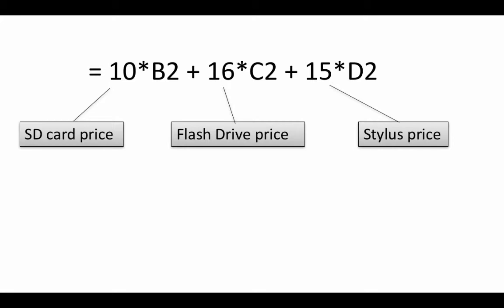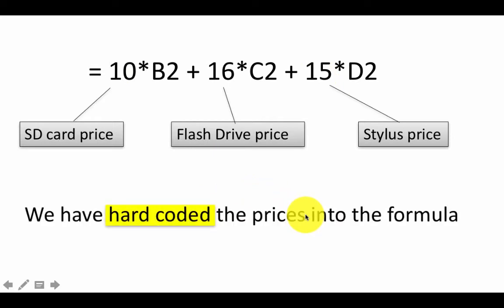When we write such numbers, actual numbers like 10 and 16 and 15 instead of putting cell addresses, we refer to this as hard coding within a formula. This is just a term we say hard coded, we just use this term to represent the fact of putting actual numbers into formulas. Why is this dangerous?